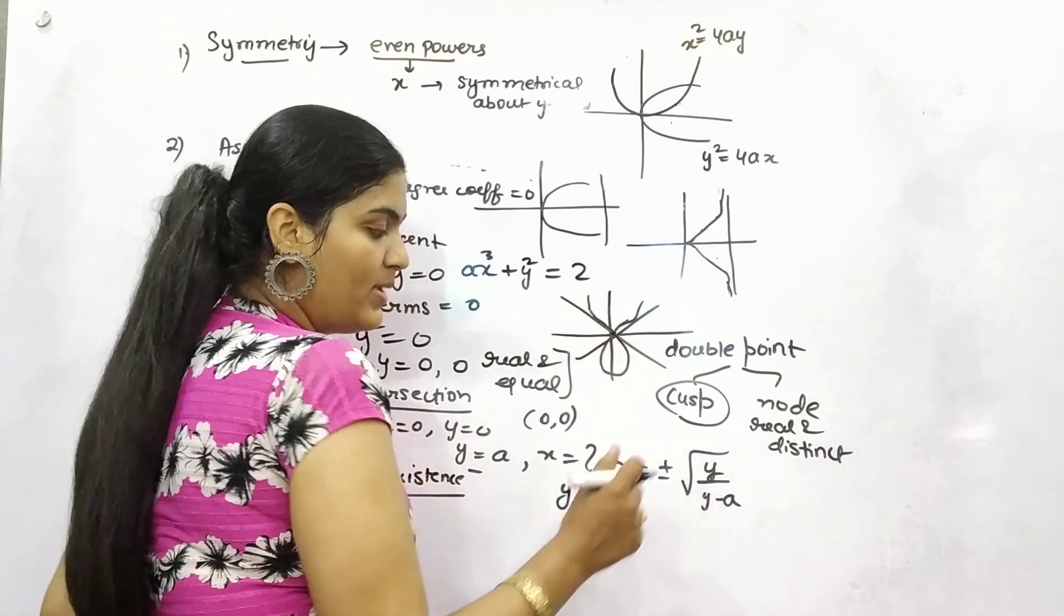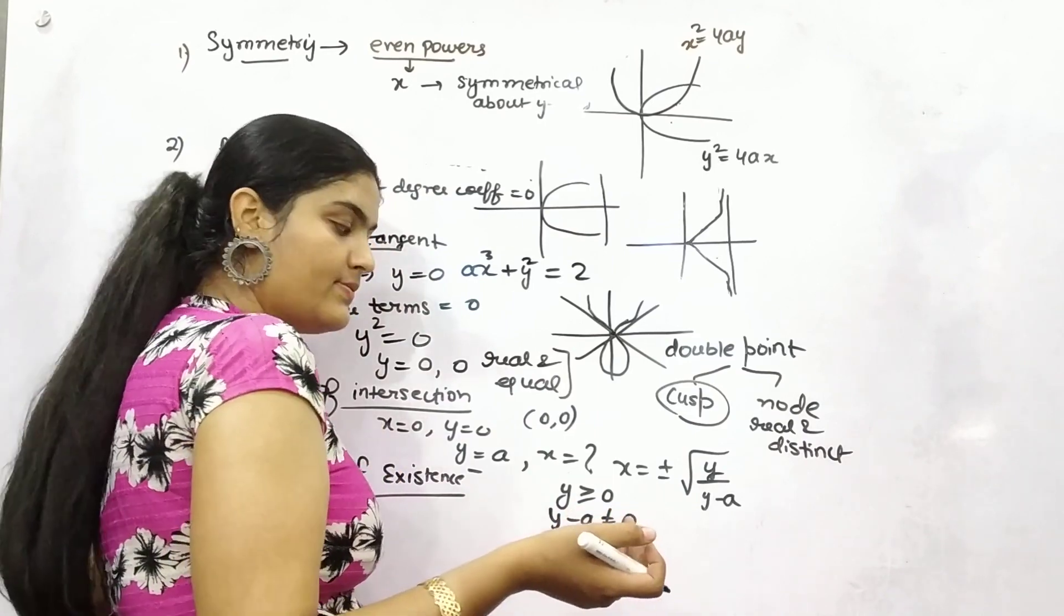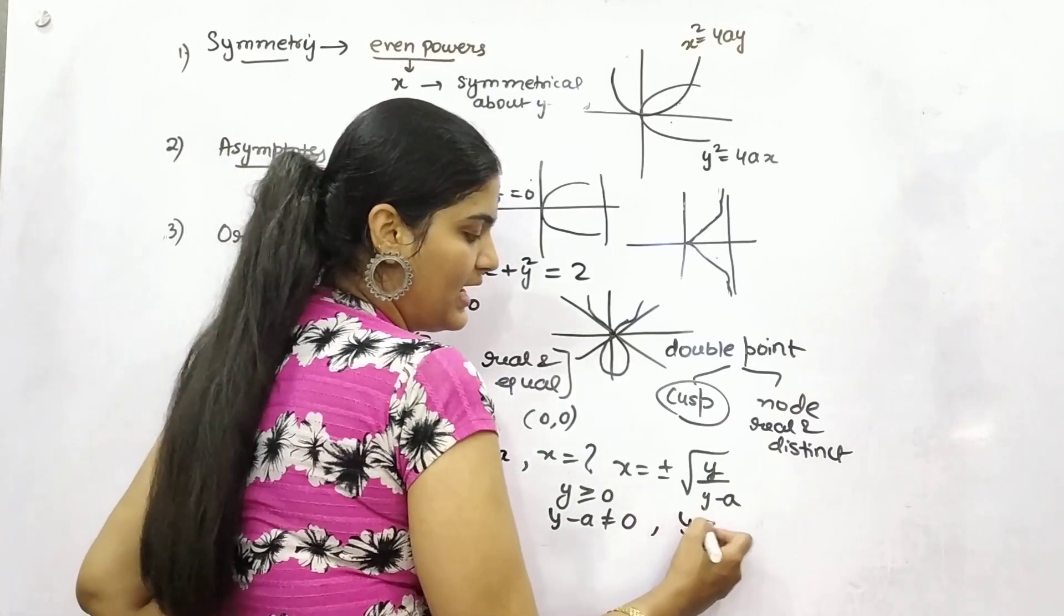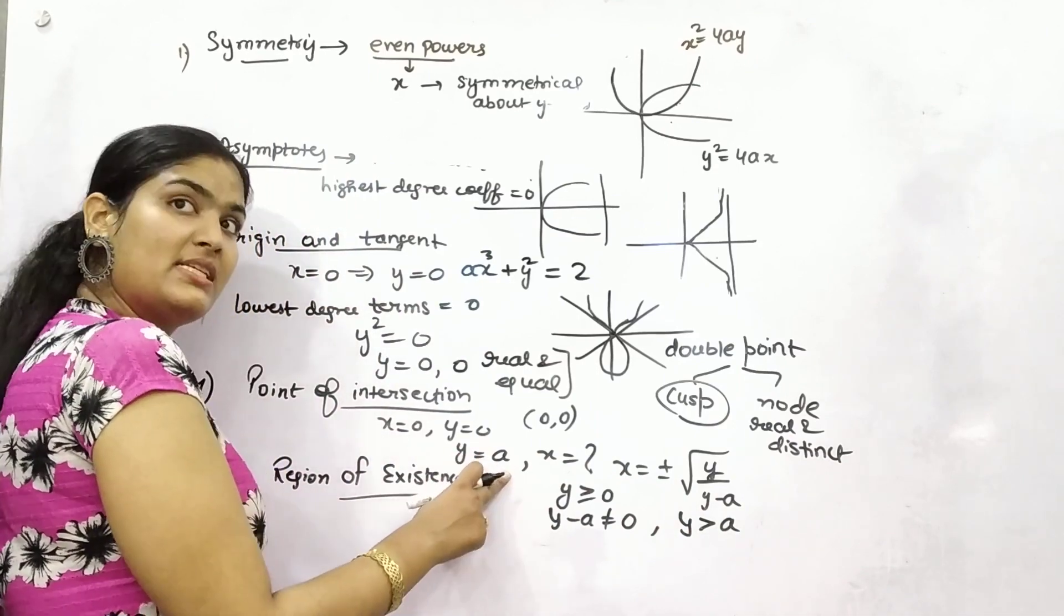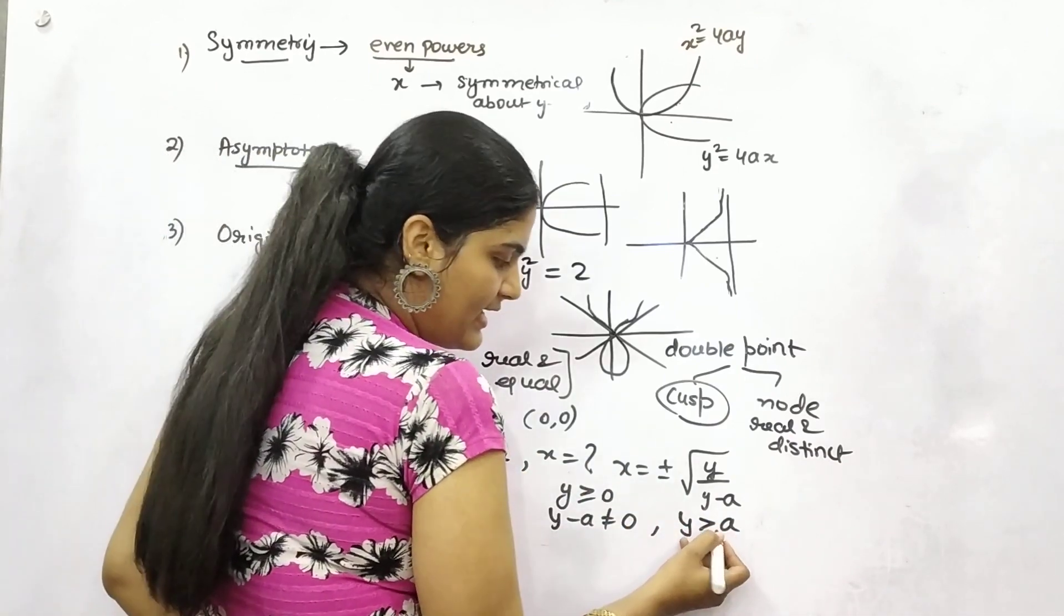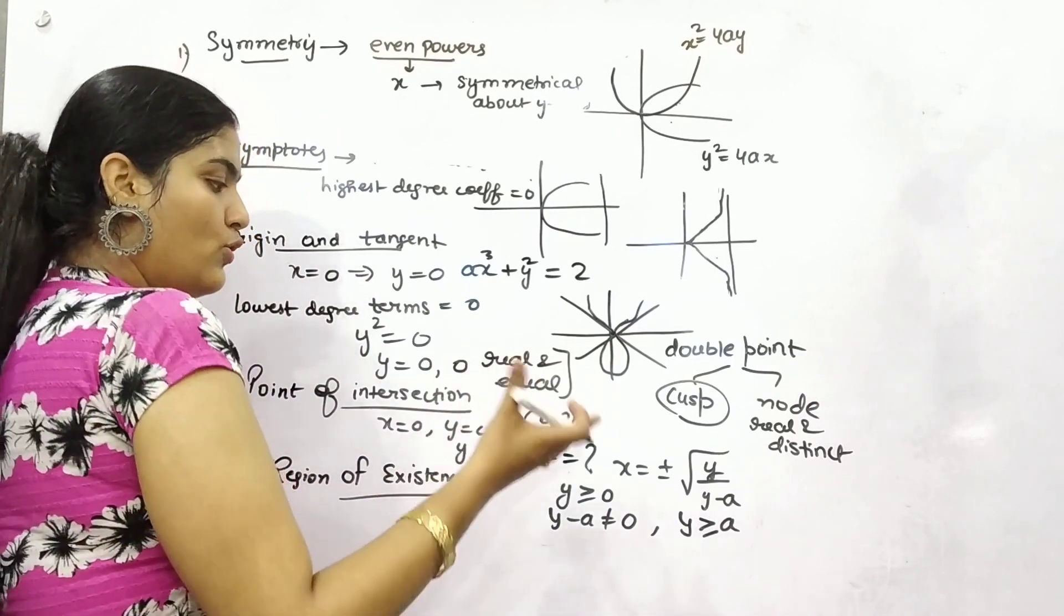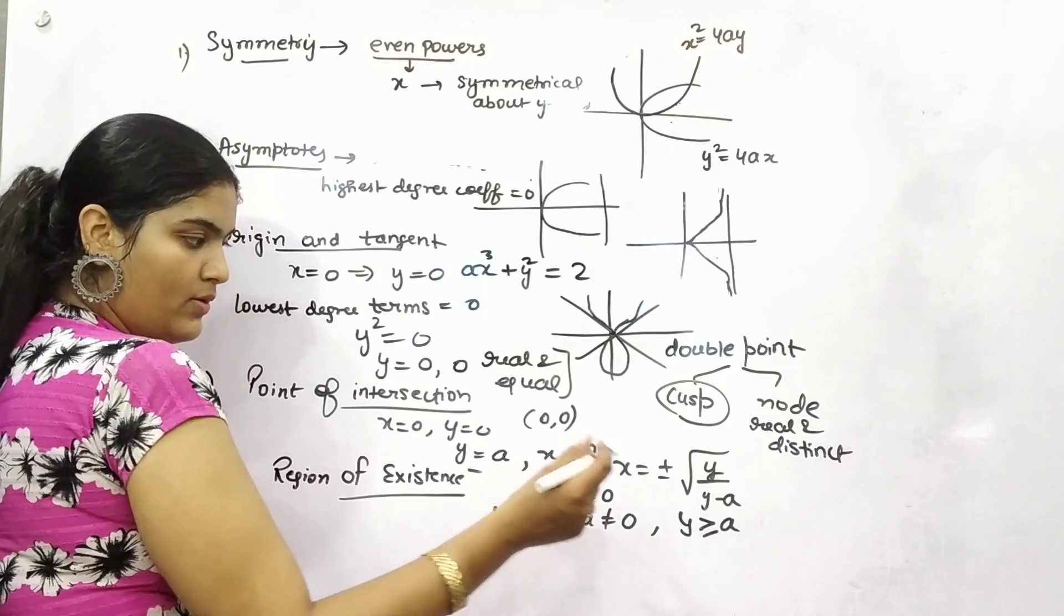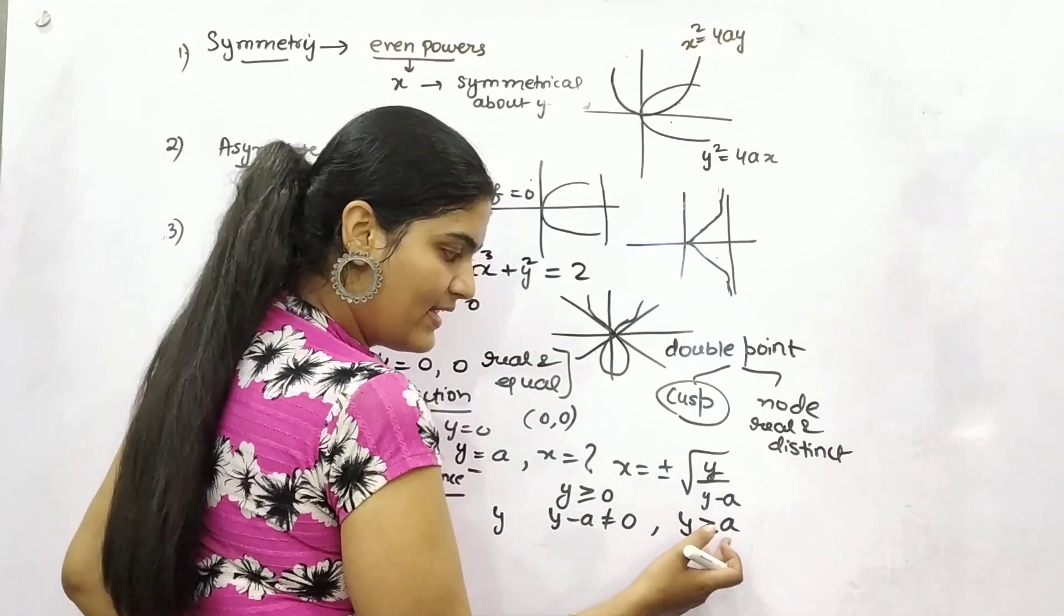For denominator form, denominator should not be 0 for real values. So it can be greater than a, or if your asymptote is equal to a, then it can be equal as well. Your y will lie on greater than 0 and greater than a as well.